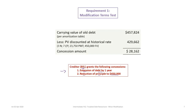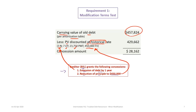To determine the concession amount, we take the carrying value of the old debt from the amortization table — $457,824 — then determine the present value of the remaining future cash flows discounted at the historical rate of seven percent. We change the number of periods from two to three due to the extension, keep the interest rate at seven percent, the payment at $23,750, but change the future value to $450,000 based on the second concession. The present value is $429,662.